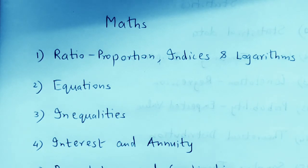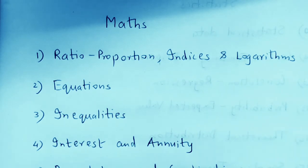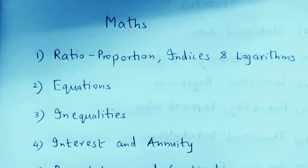Most theory questions are repeated; numericals are not repeated but theory doesn't change. That is one area where you could easily score around 8 to 10 marks. So you just have to majorly focus on the remaining 10 or so marks, making 20–25 a decent score. Now let's start with the math section.